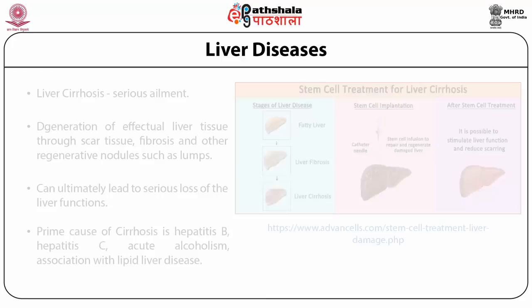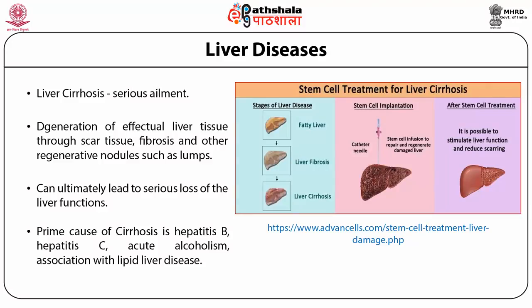Stem cells can also be used to cure liver diseases, especially liver cirrhosis, which can result from fatty liver, viral infections, or other liver diseases. In this case, stem cells can be taken from the patient's own bone marrow or from an allogeneic sibling or matched donor, isolated, and infused directly into the liver. After transplantation, these stem cells can stimulate liver function, reduce scarring, and help maintain a healthy liver.